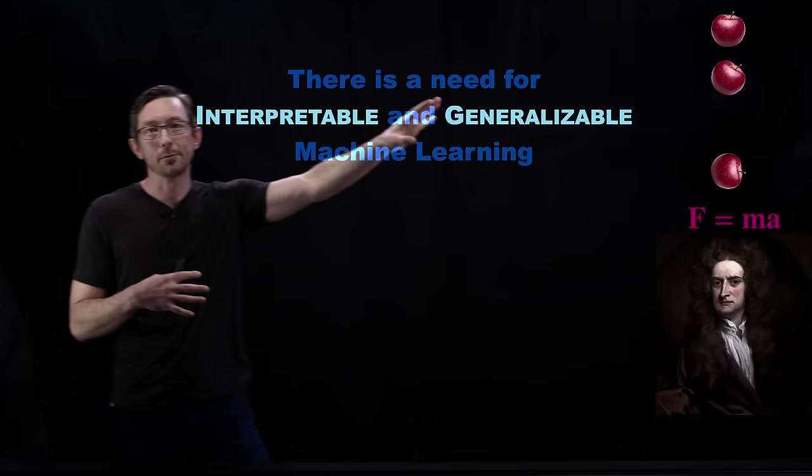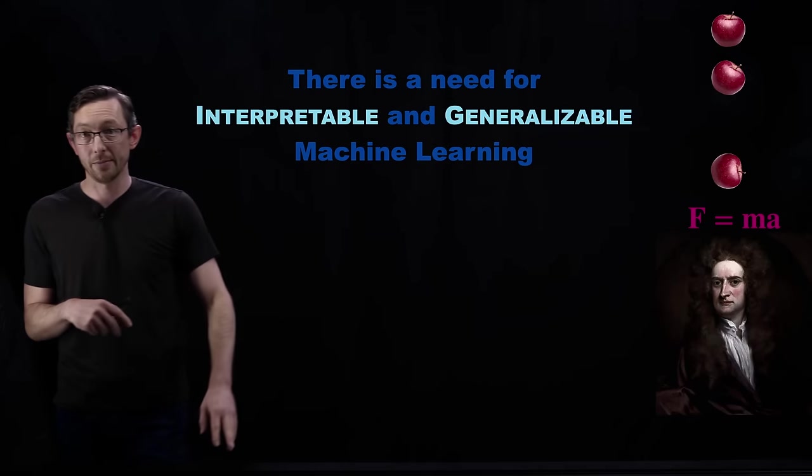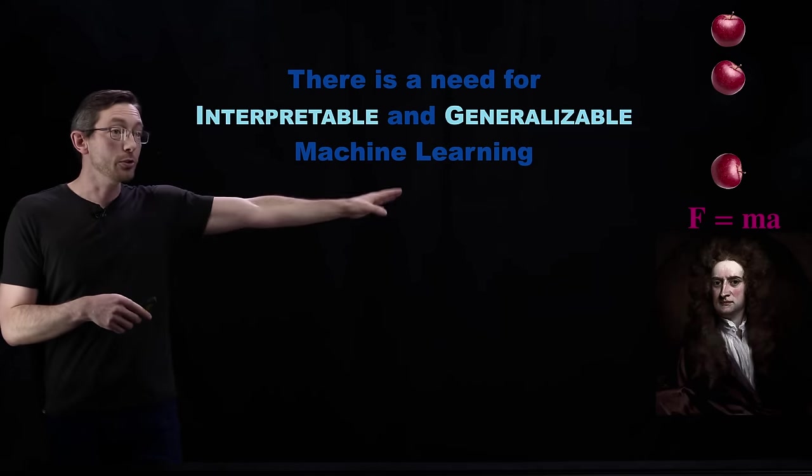What do I mean by interpretable and generalizable? Things like Newton's second law, F=ma, which is true for an apple falling on Earth and also true when we land humans on the moon — that's super generalizable. And it's very interpretable because it's simple, with only a few terms. This is the principle of parsimony. As Einstein said, your machine learning model should be made as simple as possible to describe the data, and no simpler. This has been the gold standard of physics for 2000 years, from Aristotle to Einstein.